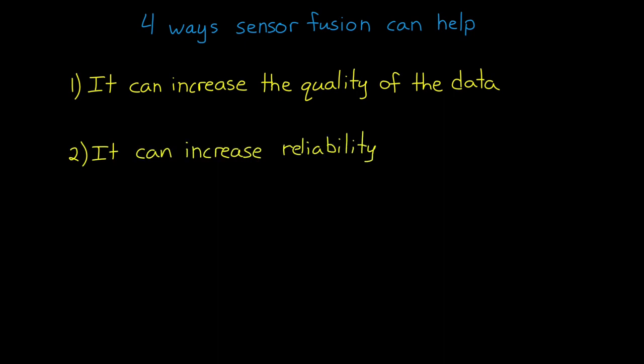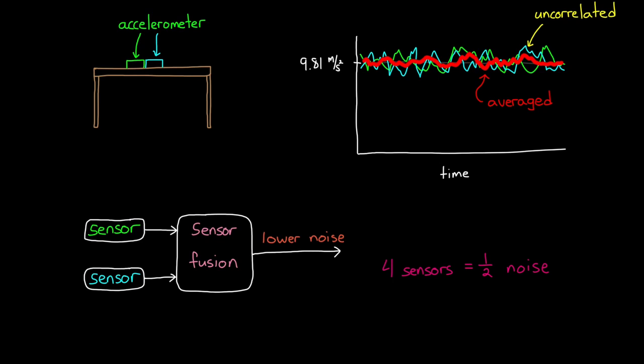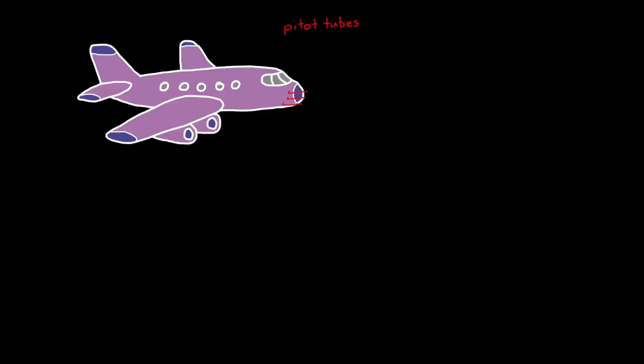The second benefit of sensor fusion is that it can increase reliability. If we have two identical sensors fused together, like we have with the averaged accelerometers, then we have a backup in case one fails. Of course, with this scenario we lose quality if one sensor fails, but at least we don't lose the whole measurement. We can also add a third sensor into the mix, and the fusion algorithm could throw out the data of any single sensor that's producing a measurement that differs from the other two. An example here could be using three pitot tubes to have a reliable measure of an aircraft's airspeed. If one breaks or reads incorrectly, then the airspeed is still known using the other two.